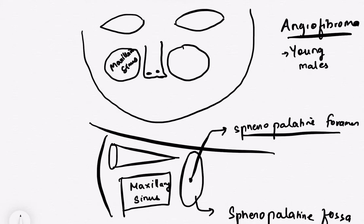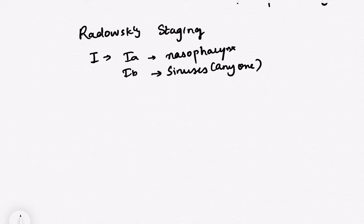Then it is divided into certain stages that is also known as Radovski's staging. Radovski's staging and the stage 1 is divided into stage 1a and stage 1b. Stage 1a is in the cavity of nose. Stage 1b means any of the sinuses, any of the sinuses example, maxillary or sphenoid or ethmoid. Any sinus spread is also known as stage 1b.